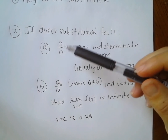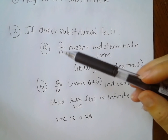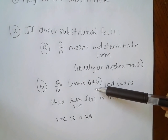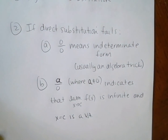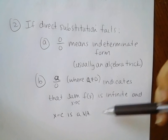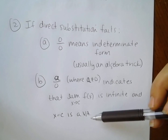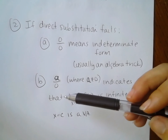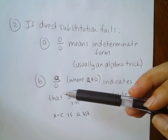If I get zero over zero, I get indeterminate form, so it's always good to plug in your value first to see what you get. Now if you get a result where the numerator isn't zero — if I get a over zero — then this is an indication that x equals c is a vertical asymptote. Remember when we were working with rational functions, whatever was left over in the denominator and made it zero was the vertical asymptote?